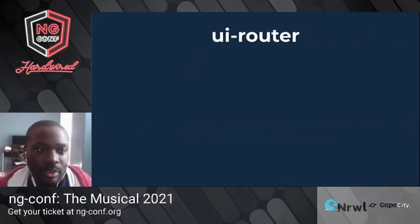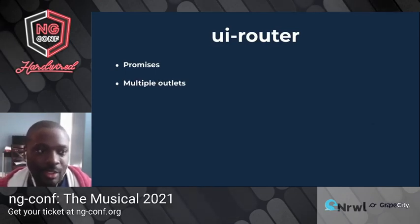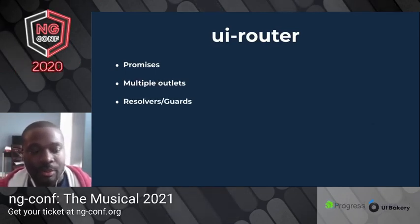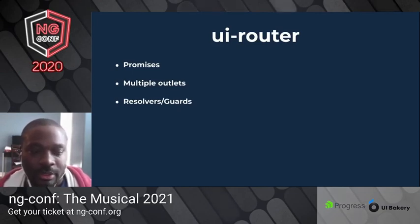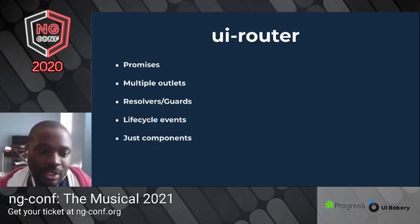UIRouter was built on top of Promises, because that's what we did in AngularJS. It had support for multiple outlets, resolvers, guards, and lifecycle events. And it was just about rendering components.